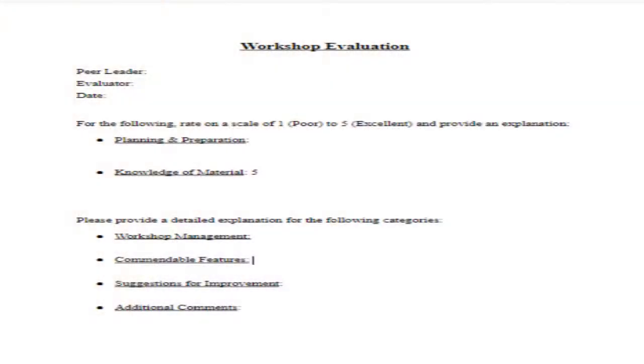The week prior to performing evaluations, the PLTL Council meets to discuss who will be assessed and how to arrange the evaluation schedule. To conduct the evaluation itself, the assigned council member enters the evaluated peer leader's workshop, preferably 30 minutes after it has begun. This allows the peer leader enough time to establish their optimal learning environment, which grants the evaluator a more accurate representation of their performance. The evaluator then quietly observes the workshop and takes notes regarding the peer leader's strengths and weaknesses, along with their course structure. After an hour has passed and enough information has been gathered, the evaluator exits the workshop and organizes their notes in an articulate manner that fits the program's evaluation template. Once finalized, the evaluation document is emailed to the peer leader to allow them to reflect on the execution of their workshop.